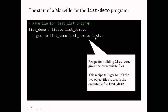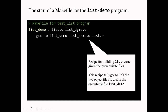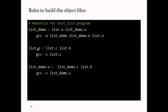In most C programs, the prerequisites for the overall target also need to be compiled separately. You define separate rules: list.o depends on list.c and list.h - if either changes, list.o gets rebuilt using 'gcc -c list.c'. Similarly, list_demo.o depends on list.h and list_demo.c, rebuilt with 'gcc -c list_demo.c'.